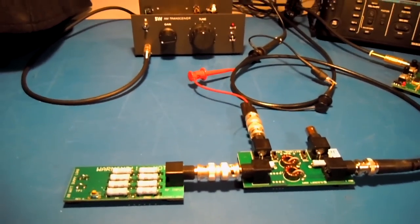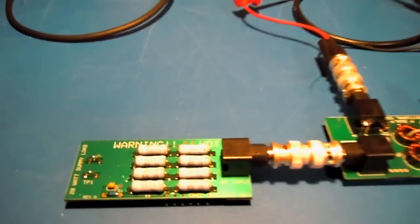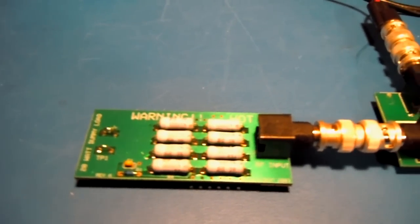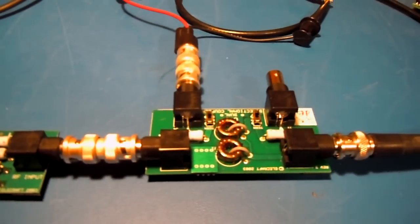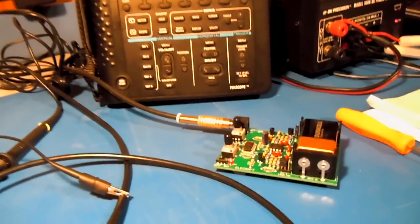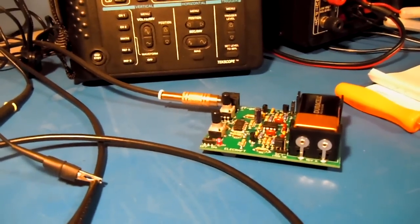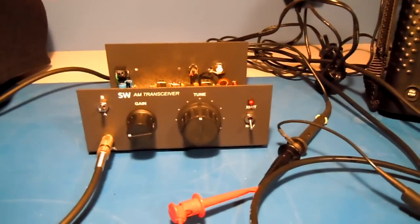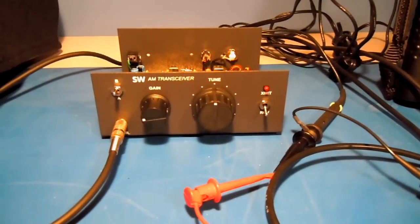Okay, this is our test setup for the Retro 75. This is an L-Craft dummy load, the L-Craft directional coupler, which we have connected to the Tektronix scope, and we have an L-Craft tone generator. This is the Retro 75, and we're feeding the mic connector directly with the tone generator.